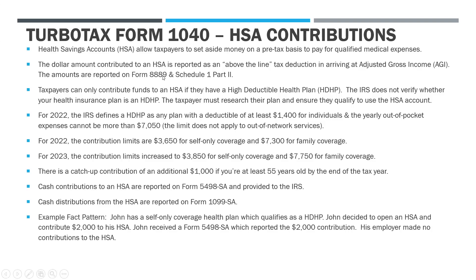Health savings accounts give a taxpayer the ability to set aside money for future medical expenses, and by setting aside the money they get a tax deduction. You fund the account, get a tax deduction on your return, and the money sits in the account until you need to use it for future qualified medical expenses. HSA contributions are reported as above-the-line tax deductions — a deduction in arriving at adjusted gross income — in contrast to below-the-line itemized deductions.